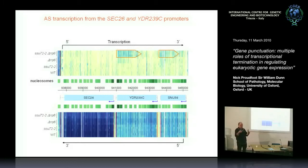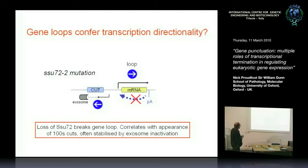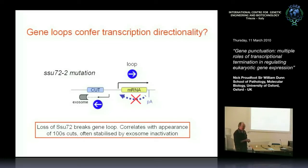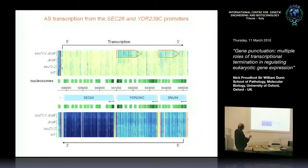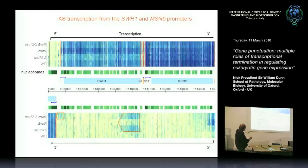When you knock out SSU72 you also find some new promoters from within the middle of genes. Bioinformatic analysis across the genome detected 605 SATs compared to almost 2,000 CUTs — so it's quite common. SAT start sites tend to cluster around 100 or so bases from the regular promoter in the opposite direction. CUTs don't show significant internal initiation, while SATs show some level of internal initiation.